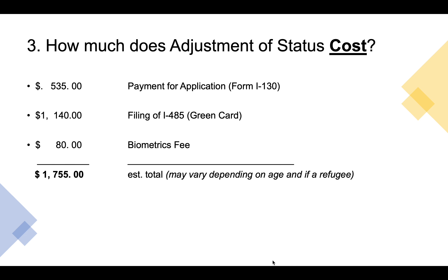If you're under 14 and filing with one of your parent's I-485s, you'll pay $995. If you're under 14 and filing on your own, you'll pay the full $1,140. The biometrics fee is waived if you're under 14 or if you're aged 79 or more. Both the filing fee and the biometrics fee are waived completely if you're filing form I-485 as a refugee. Immigrating to the United States can be expensive, but you can prepare your AOS application yourself or seek help from services like Boundless.com, CitizenPath, or RapidVisa.